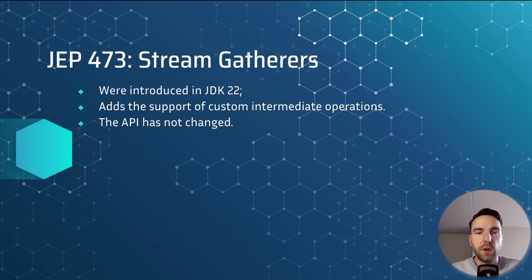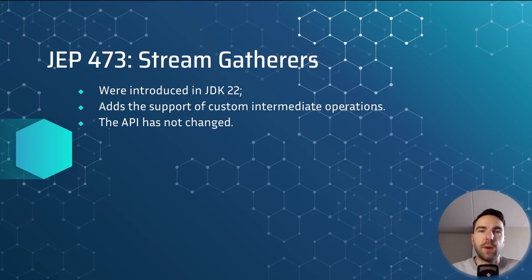With JEP 473, Stream Gatherers will introduce support for custom intermediate operations. They were first delivered as a preview feature in JDK 22 and the API has not changed — they are simply looking for more feedback.